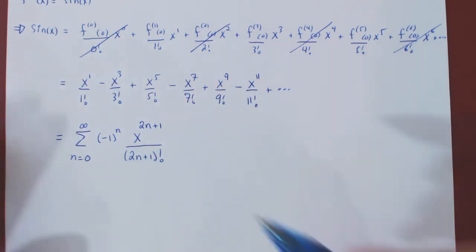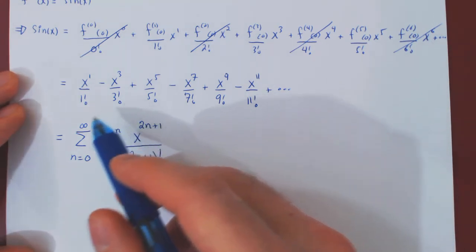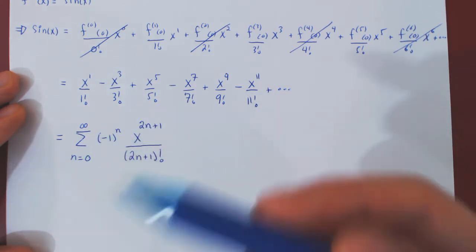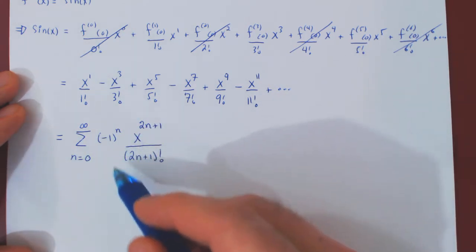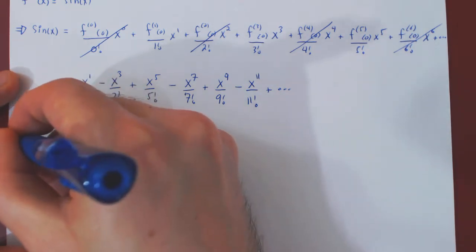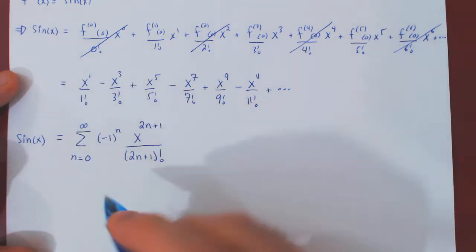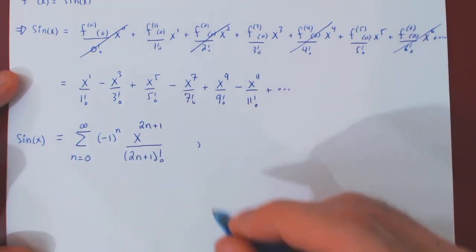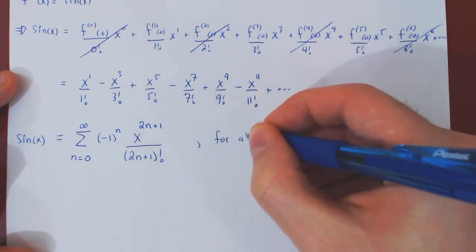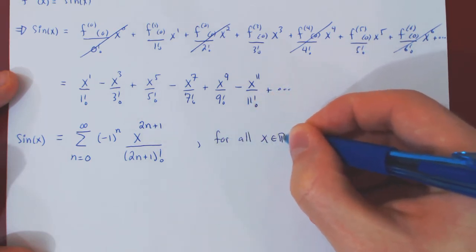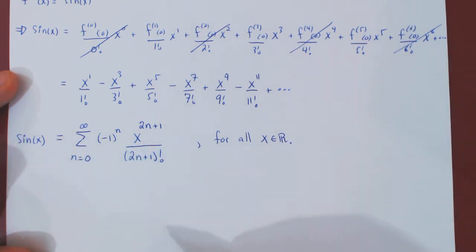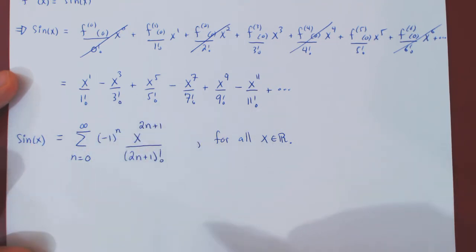As an exercise, it is easy to show that this Maclaurin series converges for all values of x using the ratio test, since we have a factorial. And because sine of x is a very nice function, it actually equals its Maclaurin series for all values of x. The equality is valid everywhere.